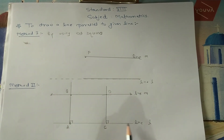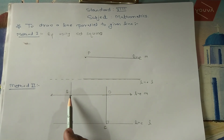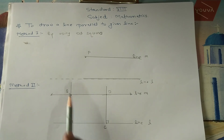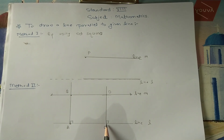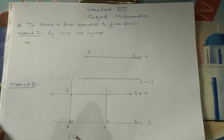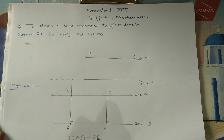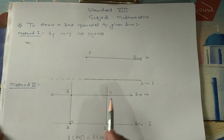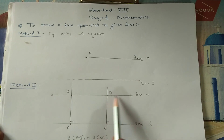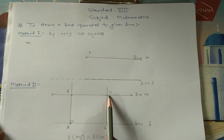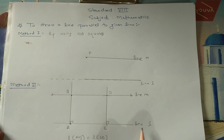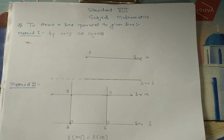In method two, you first draw the given line, then draw a perpendicular through point A and mark point B. Then, draw a perpendicular through another point C on the given line. Take the length AB equal to length CD, obtain point D, and draw a line passing through both points B and D. You will get a line parallel to the given line L. So, these are the two methods to draw a line parallel to a given line. I hope all of you understood. Thank you.